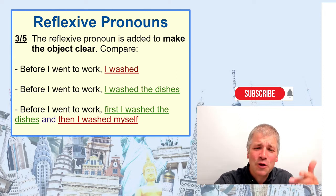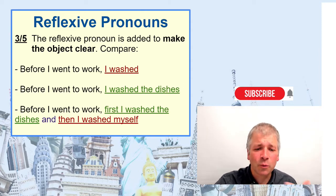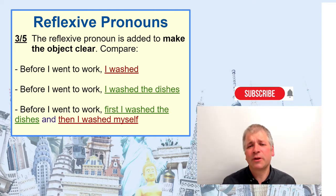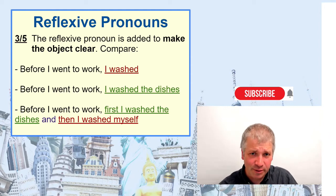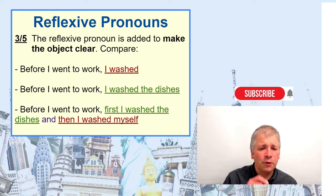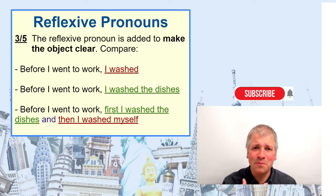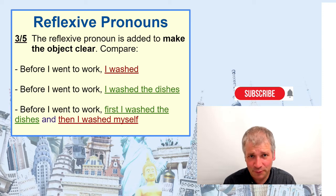Thirdly, the reflexive pronoun is added to make the object clear. Compare the following: in the first sentence, 'Before I went to work, I washed' — we don't add an object because it's fairly clear to the listener that this is something to do with me. In the second example, 'Before I went to work, I washed the dishes.' But in the third one we have both the dishes and me, so we write: 'Before I went to work, first I washed the dishes and then I washed myself.'